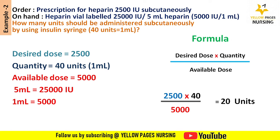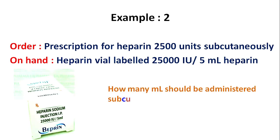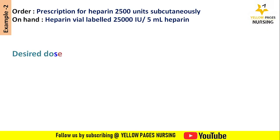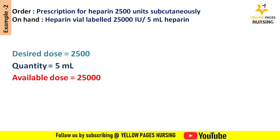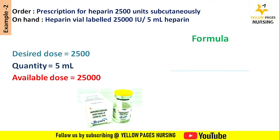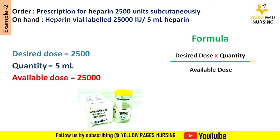Now let's look at the same example again, calculating how many ml should be administered subcutaneously. According to the doctor's order, the desired dose is 2500, the quantity is 5 ml, and the available dose is 25,000. Applying all into the formula — desired dose multiplied by quantity divided by available dose — we get the answer: 0.5 ml.